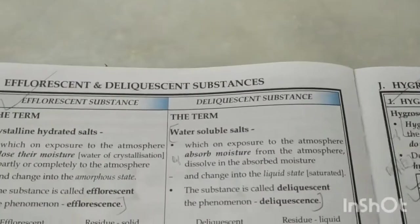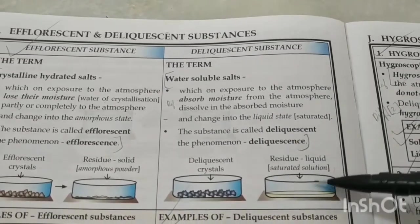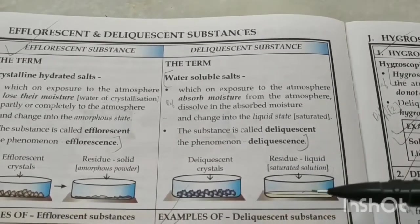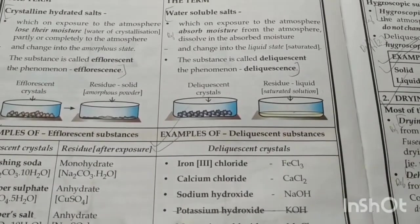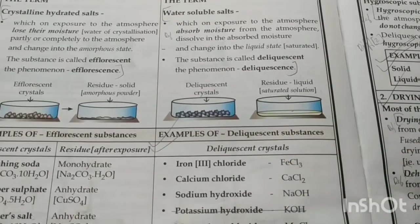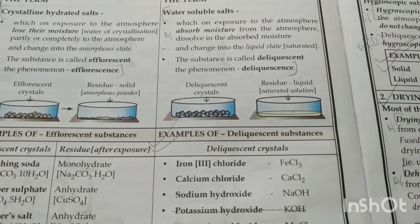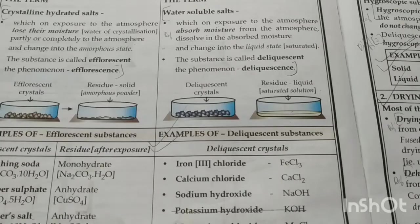Deliquescent substances are water-soluble salts which, when exposed to the atmosphere, absorb moisture and actually become saturated solutions — they change their state. Examples include ferric chloride, calcium chloride, and sodium hydroxide. That's why ferric chloride is stored in airtight bottles. Sodium chloride itself is not deliquescent, yet table salt becomes moist in monsoon season because it contains impurities like calcium chloride and magnesium chloride, which are deliquescent and absorb moisture from the air.